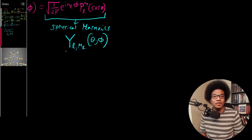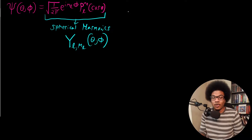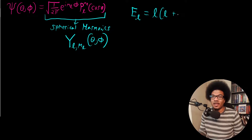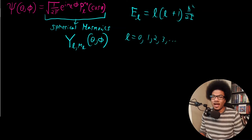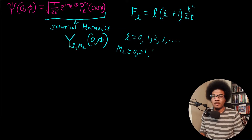Lastly, we get an energy expression for the three-dimensional particle on a sphere. That energy expression depends on the quantum number L, and the expression is L times (L plus 1) times h-bar squared over 2I. L is an integer and can take on values zero, one, two, three, and so on. M sub L can take on values zero, plus or minus one, plus or minus two, and so on.